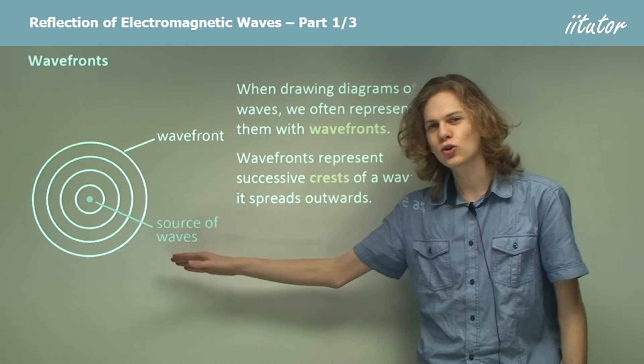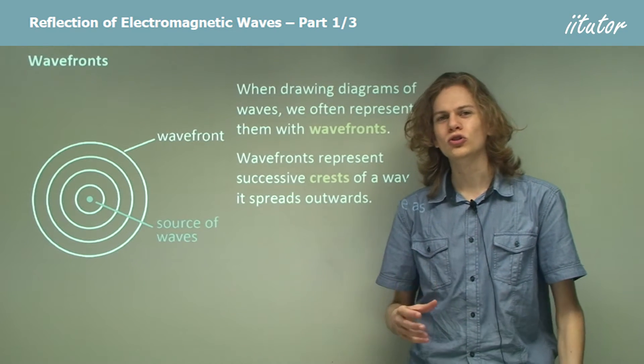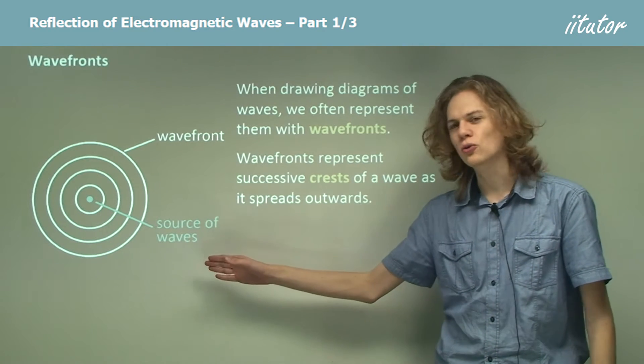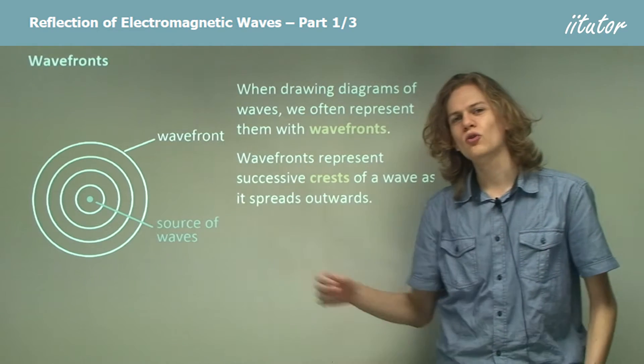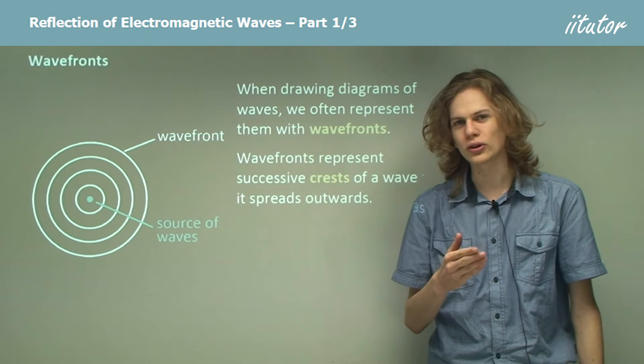We can see that in a two-dimensional wave, the crest of the wave won't just be a single line, it'll be a big circle. So by drawing successive wavefronts, we can represent the wave spreading out from the starting point.